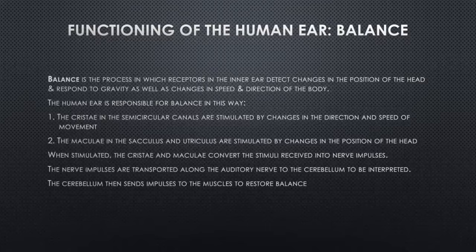The cristae are stimulated by changes in the direction and speed of movement of the body, while the maculae are stimulated by changes in the position of the head. When both are stimulated, they convert the stimuli received into nerve impulses, which are transported to the cerebellum through the auditory nerve for interpretation. The cerebellum then sends signals to your muscles, telling them what to do in order to restore your balance and prevent you from falling.